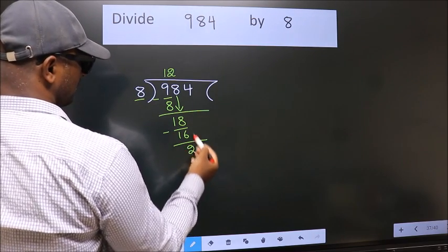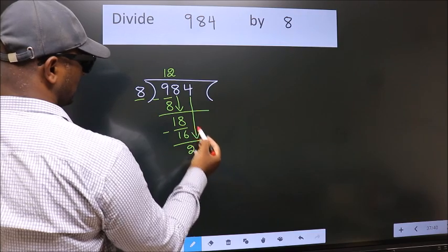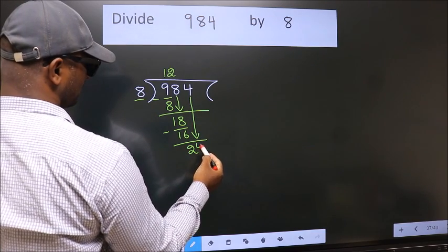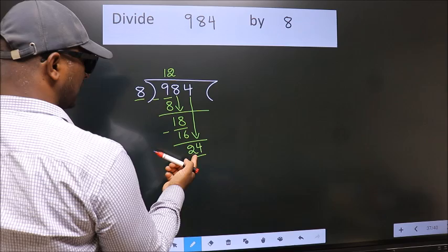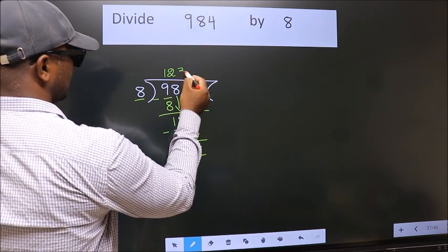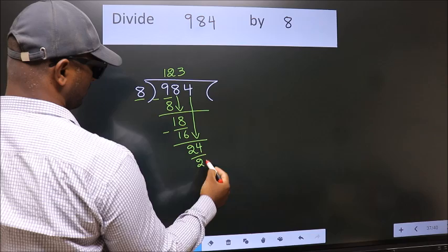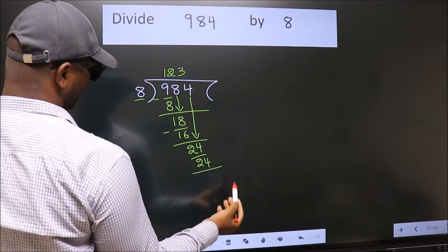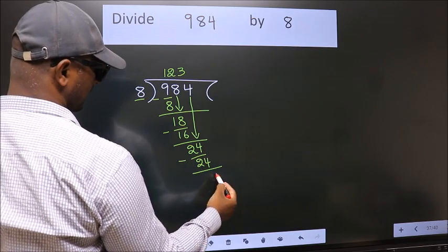After this, bring down the beside number. So, 4 down. So, 24. When do we get 24? In the 8 table, 8 threes, 24. Now, we subtract. We get 0.